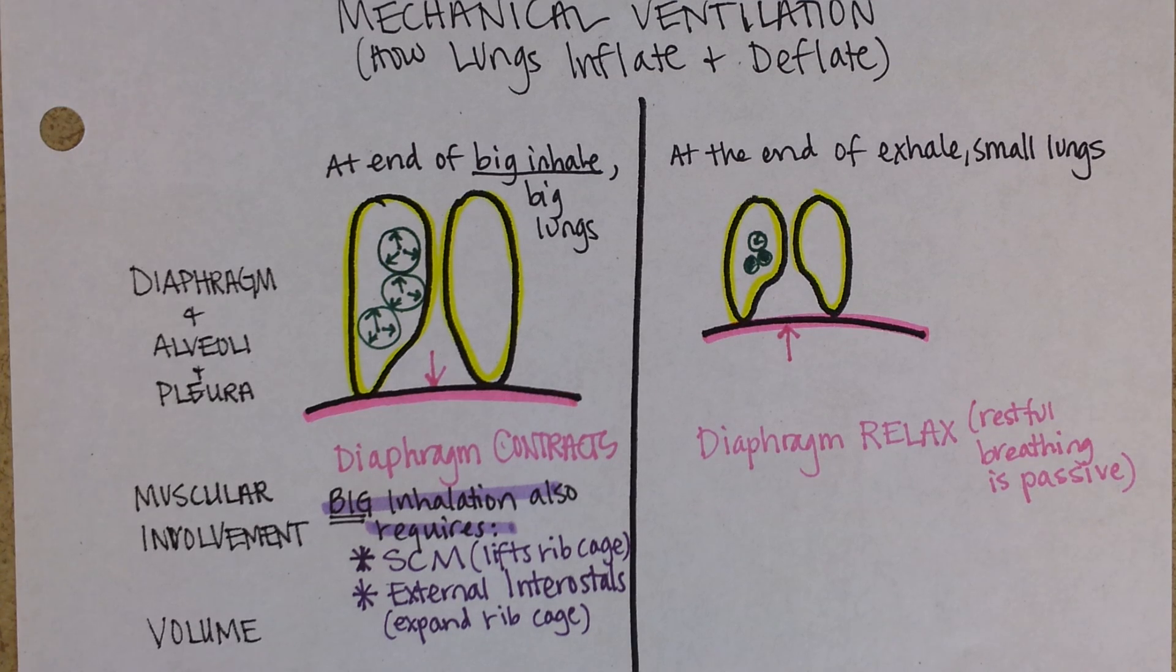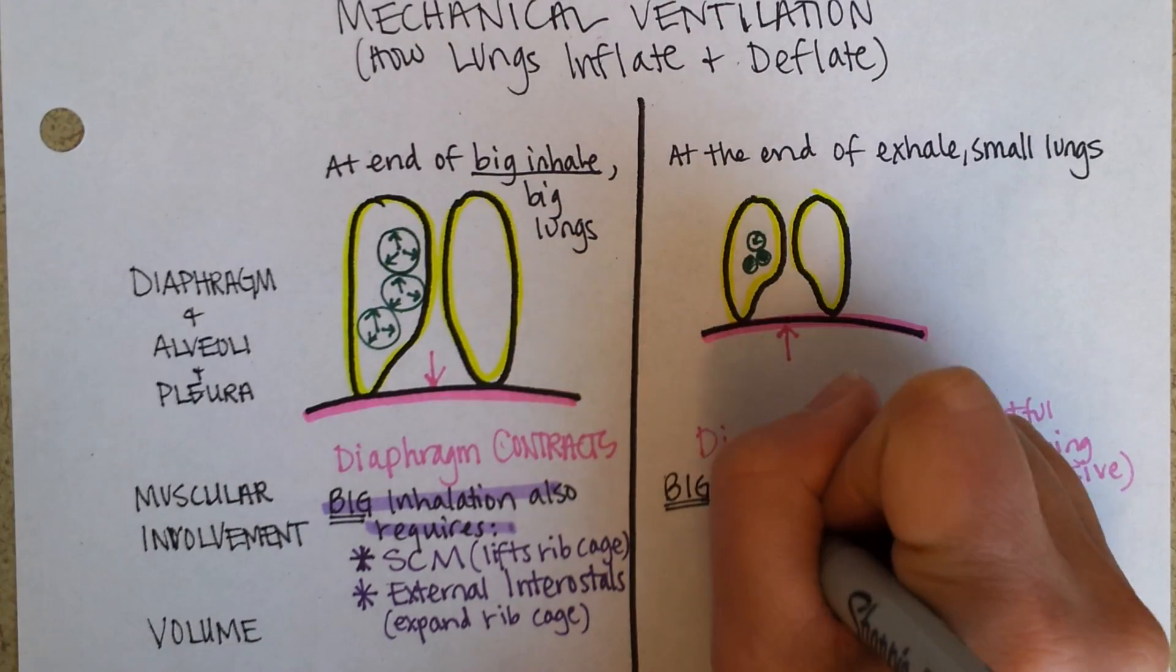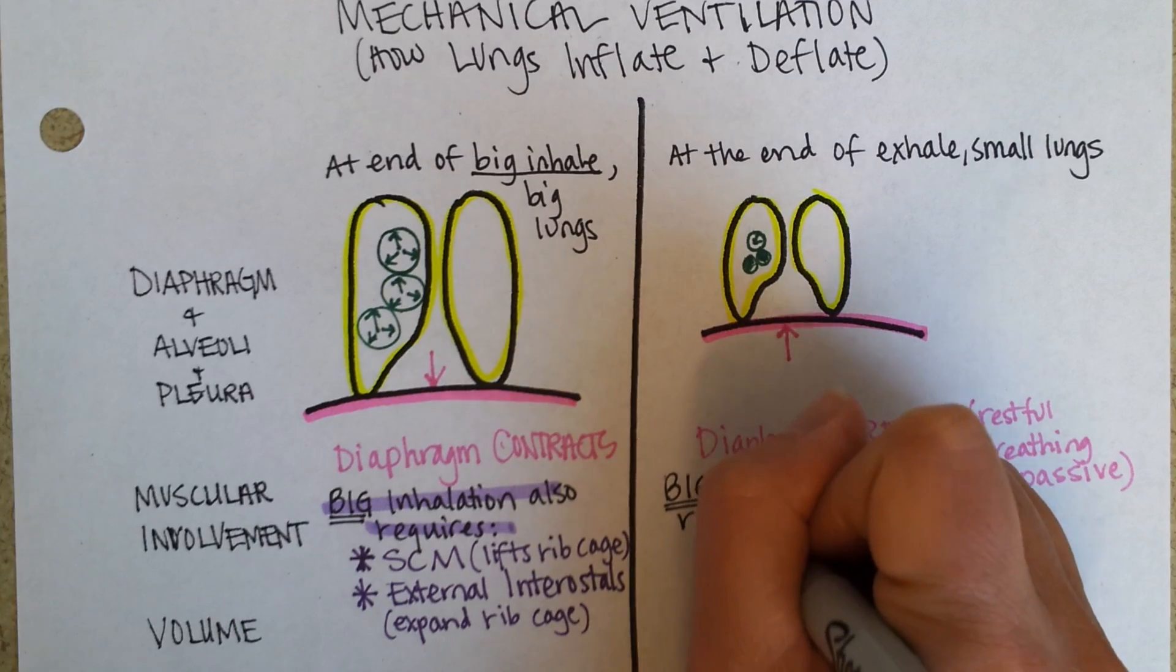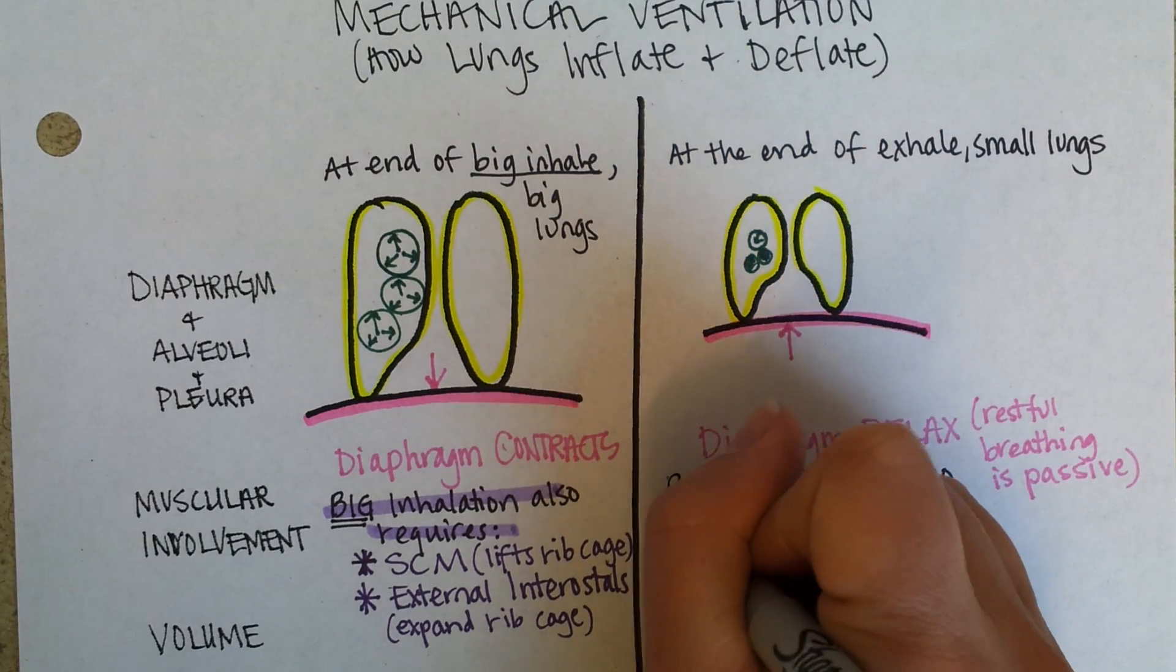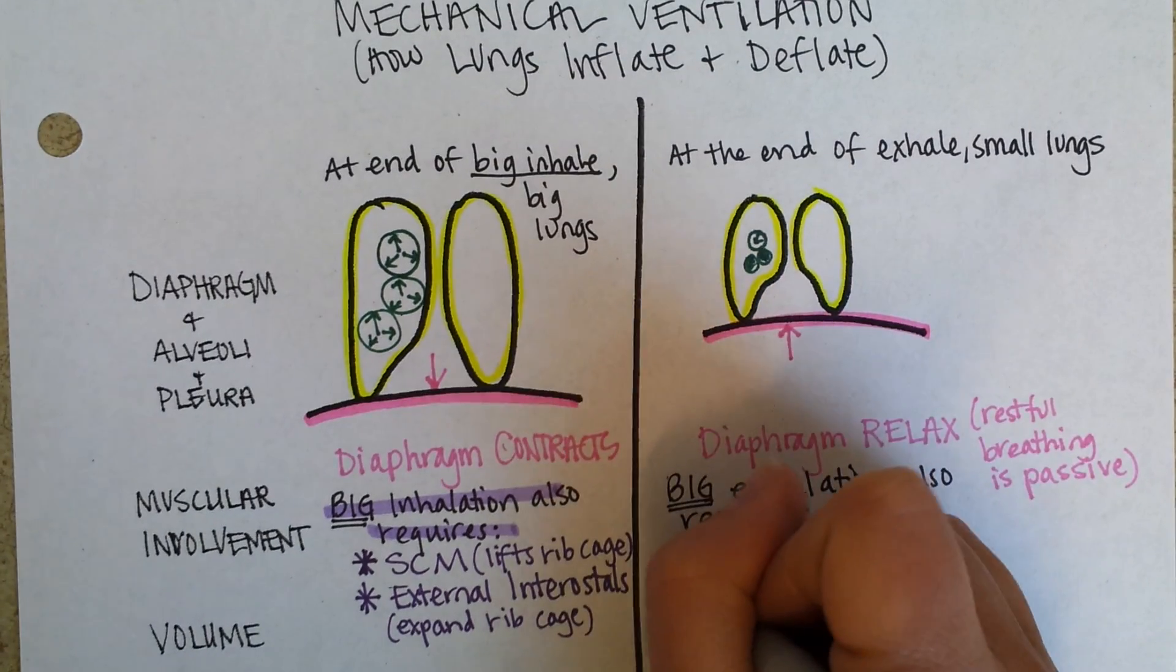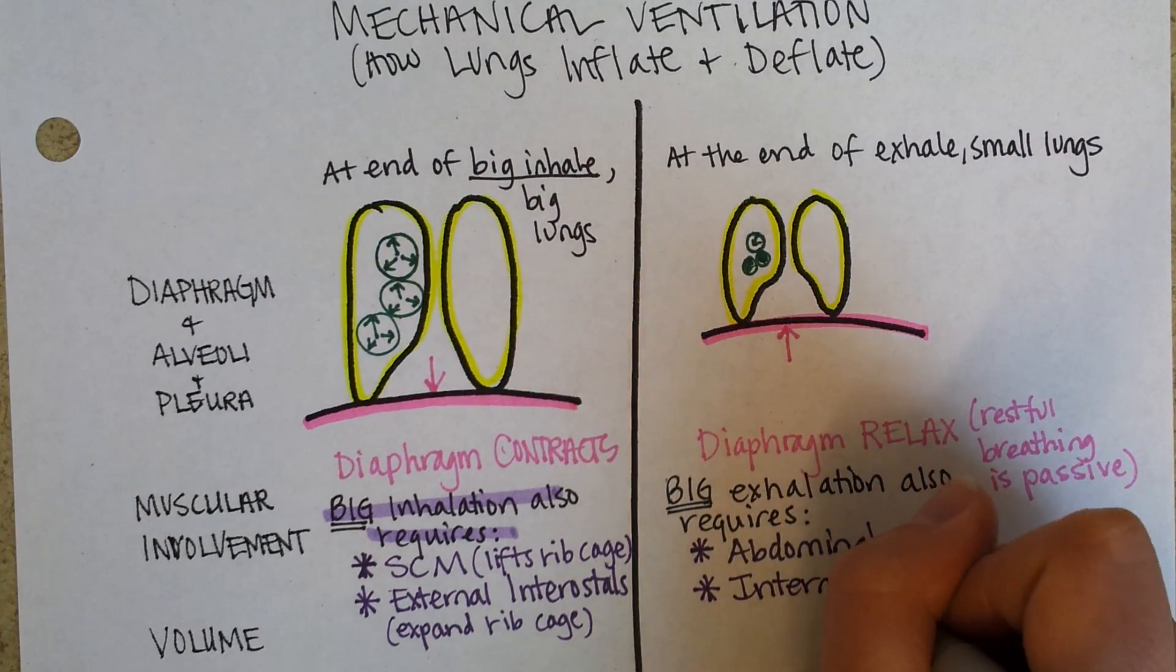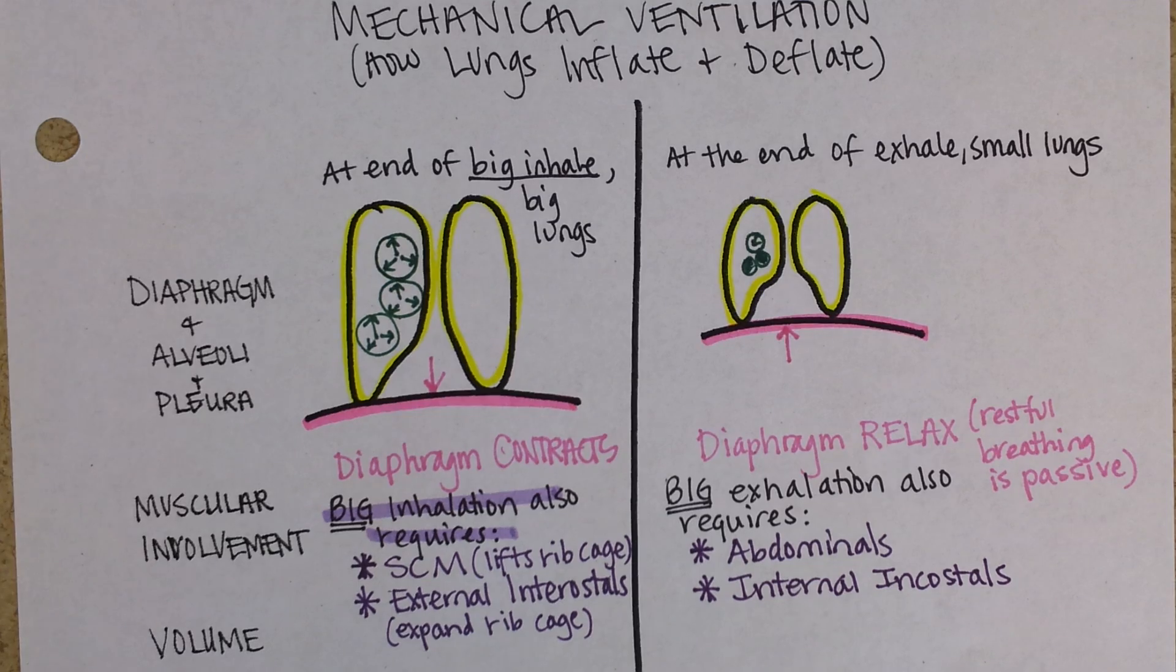And although you can't see it, your diaphragm is going down and then blow out as much as you can. What are you doing? You're contracting your abdominal muscles. So a big exhalation also involves the abdominals and rib muscles known as the internal intercostals. When these contract, they're attached to the ribs in such a way that they make the rib cage deflate back in.